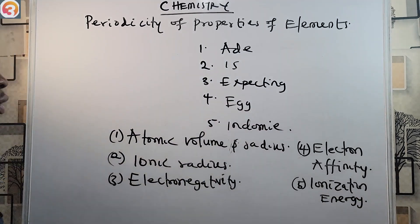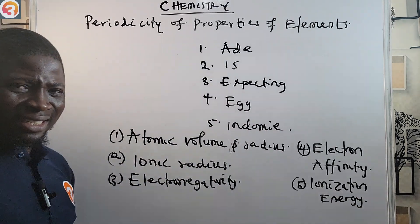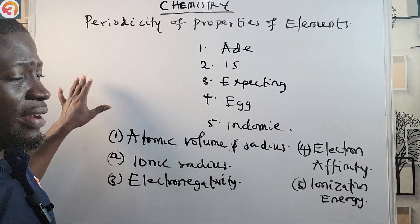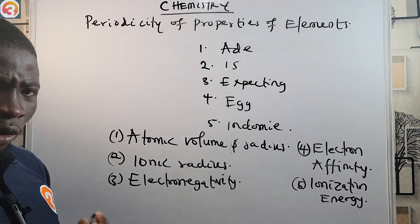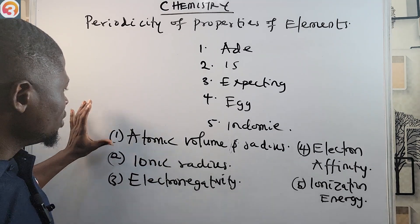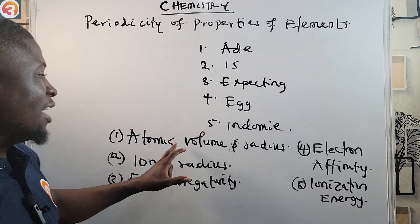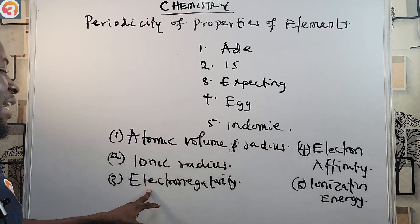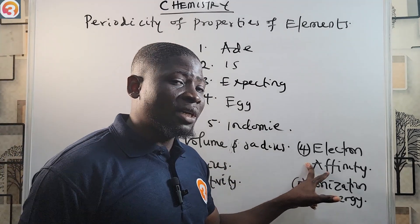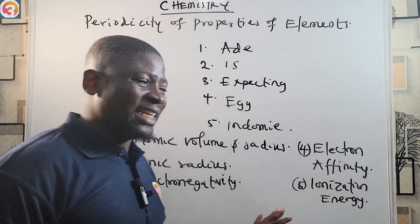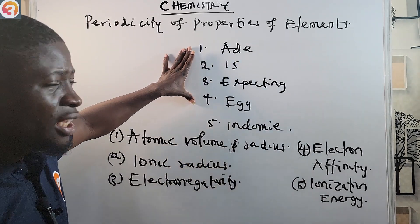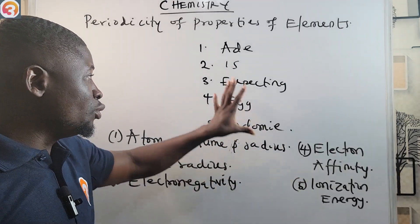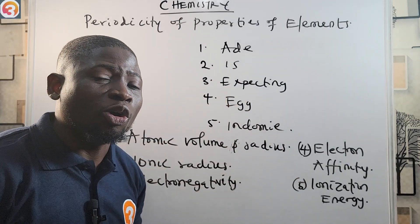Some elements show periodicity — the recurrence of properties at regular intervals. We're looking at these five properties: atomic volume and radius, ionic radius, electronegativity, electron affinity, and ionization energy. The mnemonic 'A I E E I' helps you remember them in order.